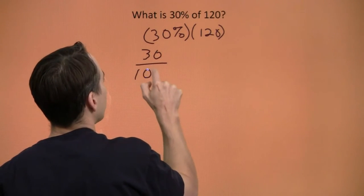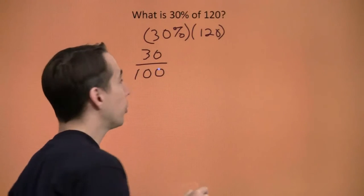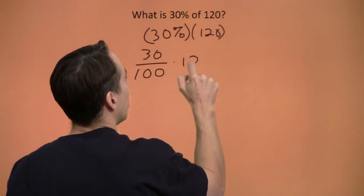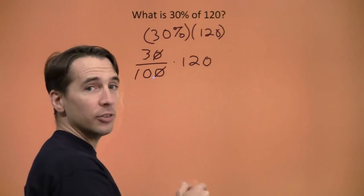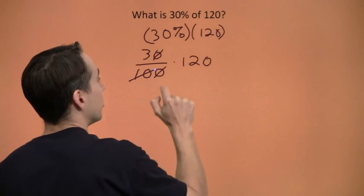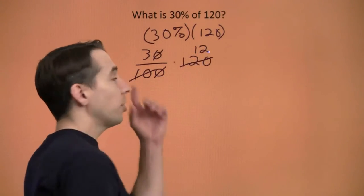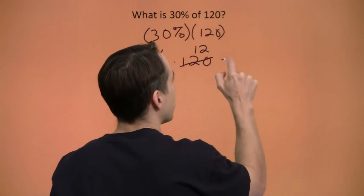30 percent. Percent means per hundred, so that's just 30 over 100 times 120. Knock out a common factor of 10, and we have 3 tenths. We can also knock out a factor of 10 between the 10 and 120, and we're left with 3 times 12. That's 36.